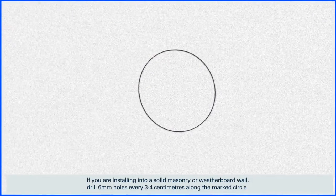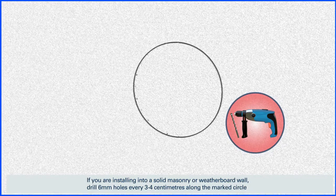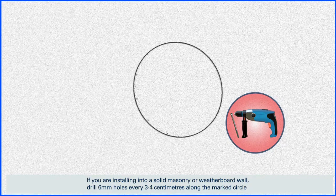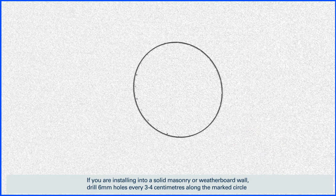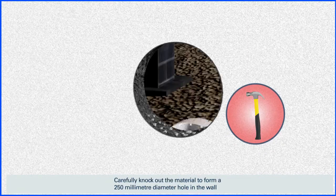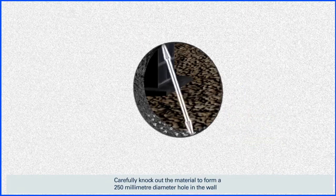If you are installing into a solid masonry or weatherboard wall, drill six millimeter holes every three to four centimeters along the marked circle. Carefully knock out the material to form a 250 millimeter diameter hole in the wall.